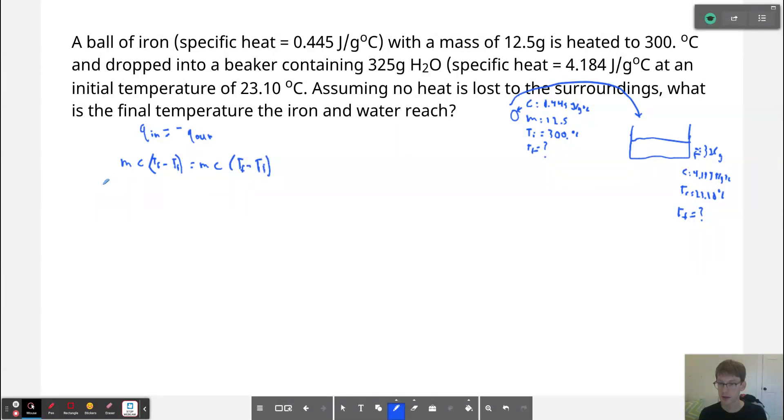And what that comes to is that we have the water at 325 grams times 4.184 joules per gram degree Celsius times an unknown Tf minus the known initial temperature of water, which is 23.10 degrees Celsius. And we're setting that equal to—do not forget the negative sign, I do this all the time—negative 12.5 grams of iron times 0.445 joules per gram degree Celsius, the specific heat of iron, times Tf minus the initial temperature of 300 degrees Celsius.